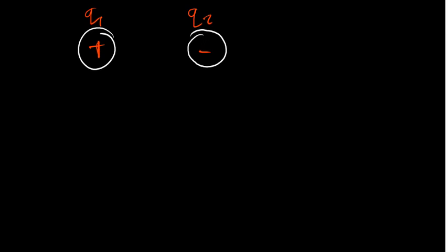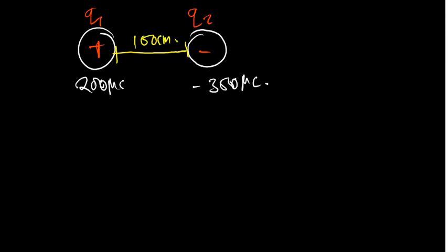Let's assume Q1 has 200 microcoulombs, and Q2 has negative 300 microcoulombs. The separation distance between these two charges is 80 centimetres.